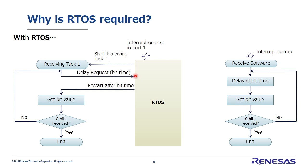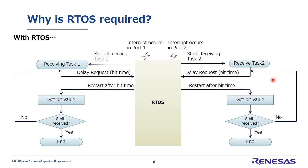When the RTOS gets this system call, after the designated time it will reactivate receive task 1. The RTOS can operate freely until it's time to activate that task again — enabling execution of other tasks during that wait time. After the designated time has elapsed, the RTOS reactivates receive task 1. Receive task 1 receives the data, and then invokes the delay system call once more to wait for one bit of time. This is repeated eight times. We can register the same software as a task on port 2, and it will activate as needed whenever an interrupt occurs.